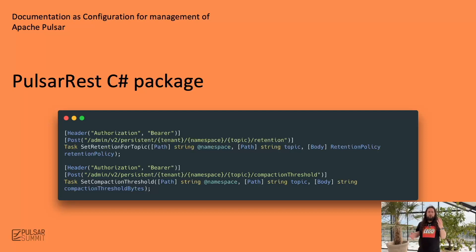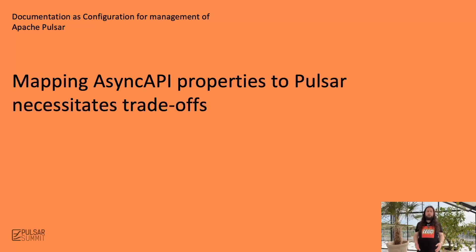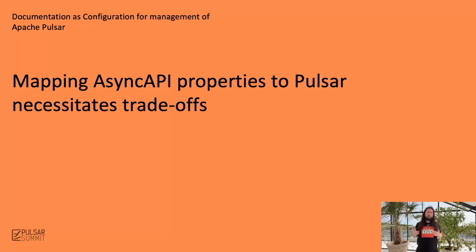For the retention policy, we still pass the namespace and topic names as strings, but for the retention policy object we pass a custom C# class that serializes to JSON in the correct format whenever the call is made. For both calls, the tenants are implicit and are set when the client is instantiated.